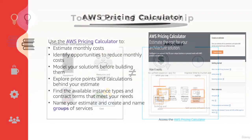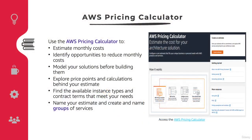You can use the AWS Pricing Calculator to estimate your monthly AWS bill for your infrastructure and explore services. Sometimes you use this tool to find out in which region you should create an EC2 instance or an S3 bucket to get the lowest price among all AWS regions. You can model your solution before building it and explore price points and calculations behind your estimates.